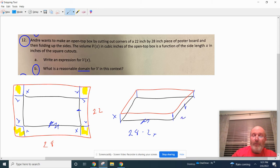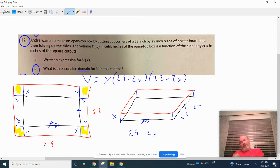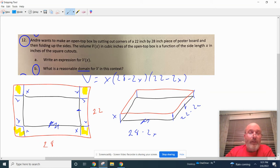This part corresponds to this part and that's going to be 28 minus 2X, and this part corresponds to this part that's going to be 22 minus 2X. So your volume is equal to X times 28 minus 2X times 22 minus 2X.